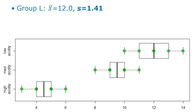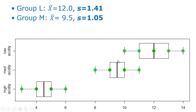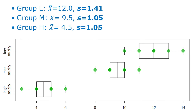Group L has a mean of 12 and a standard deviation of 1.41. Group M has a mean of 9.5 and a standard deviation of 1.05. Group H has a mean of 4.5 and a standard deviation of 1.05. So all standard deviations are pretty close, except group L has a slightly bigger one. I've added a red line for the mean and blue error bars going one standard deviation above and below the mean.